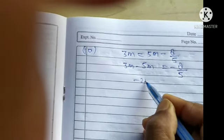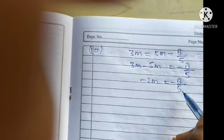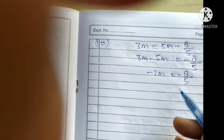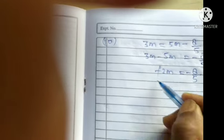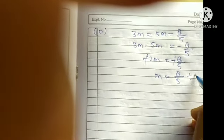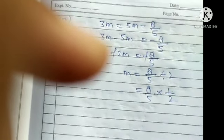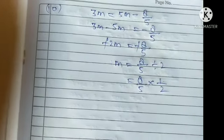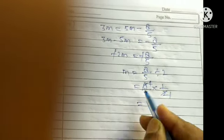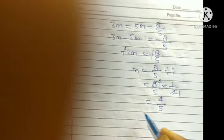You get minus 2m is equal to minus 8 upon 5. Minus is on both sides, so cancel it. You get m is equal to 8 upon 5 divided by 2. That means 8 upon 5 into 1 upon 2. When the division sign is changed to multiplication, the fraction is reversed. You get 8 upon 10, simplifying to m is equal to 4 upon 5.